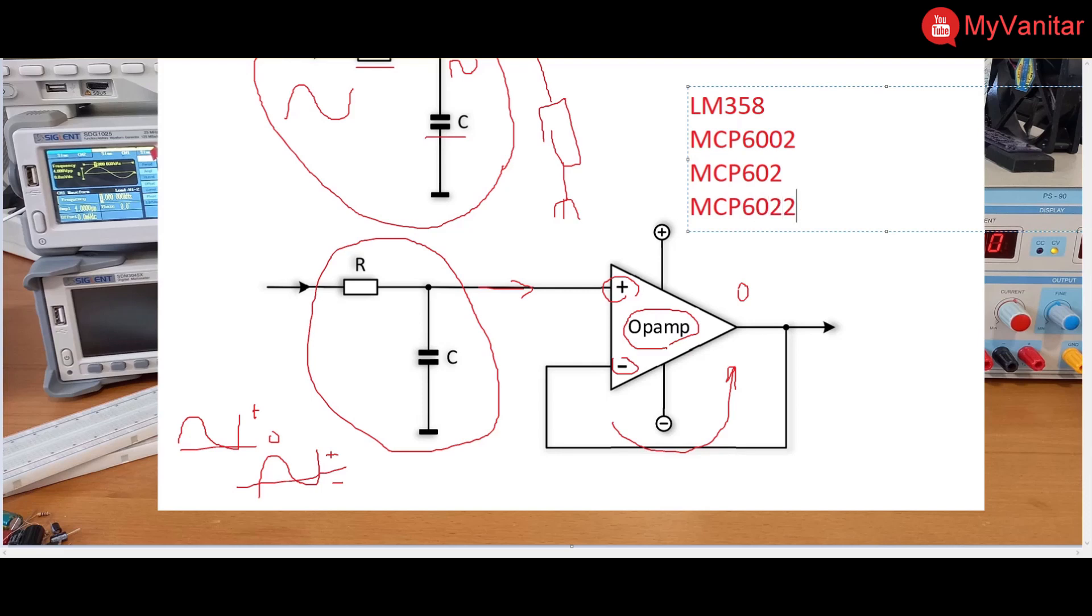I think this op-amp has a bandwidth of 10 megahertz, which is very good. You can apply high-frequency signals to the input. Let's go to the test bench and show you the operation of this filter in practice.